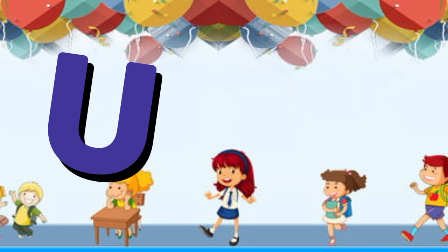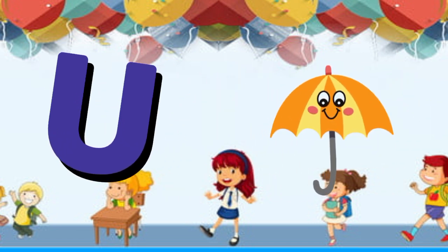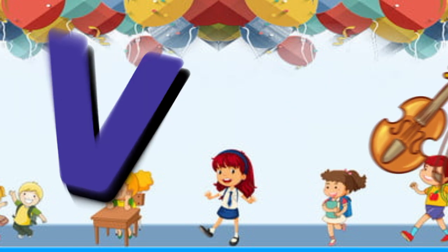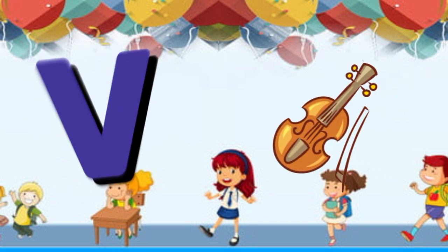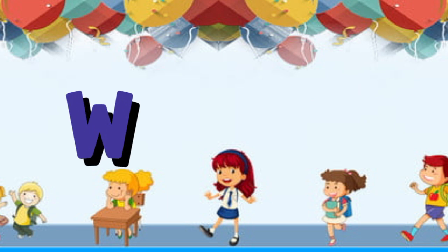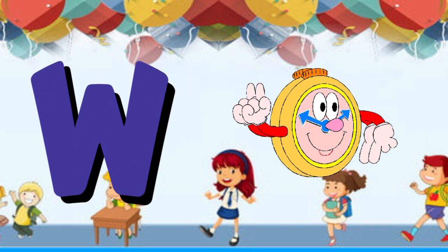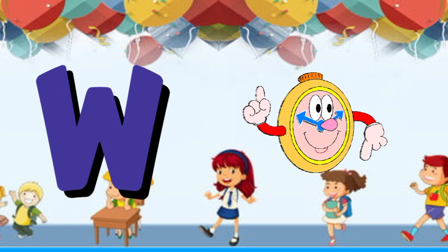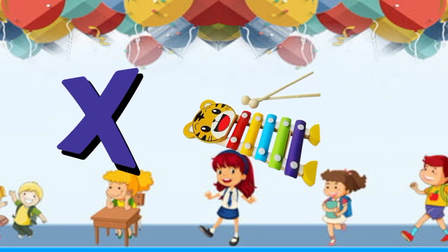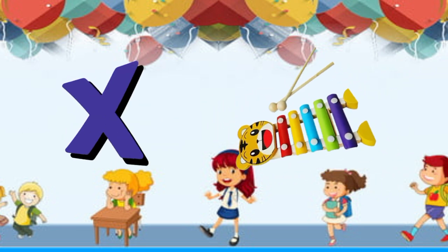U is for umbrella, u-u-u-umbrella. V is for violin, v-v-violin. W is for watch, w-w-watch. X is for xylophone, x-x-xylophone.